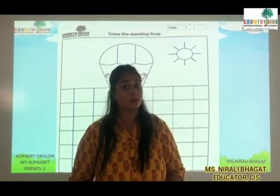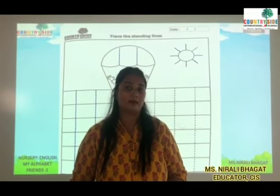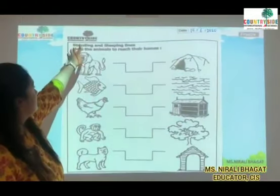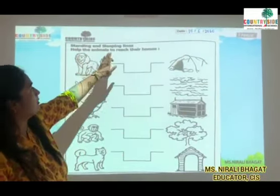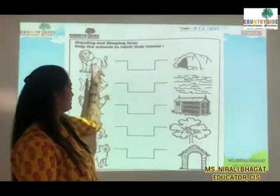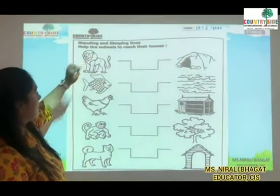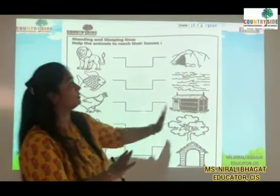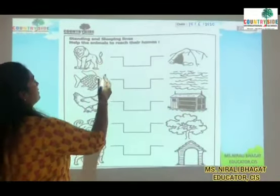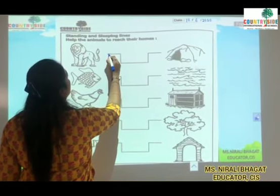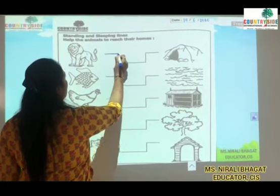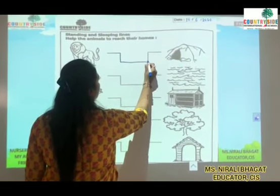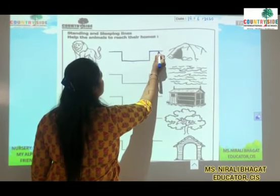Children, do you want to do one activity with me? Take out page number 10 and get ready with your pencil. This is page number 10 — standing and sleeping lines. Help the animals to reach their homes. We need to help lion, fish, hen, monkey, and dog reach their home. So let's start — we will help lion first. By joining the dots you will help each animal reach its home. Standing line and then sleeping line.